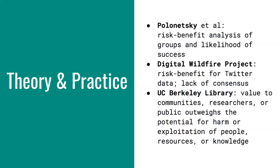In this video, we looked at a few examples from research teams who have wrestled with ethical considerations in big data. Polonetsky et al. developed a formula for a risk-benefit analysis based on the scope of benefit to different groups and the likelihood that each group would receive those benefits. The Digital Wildfire Project attempts a risk-benefit analysis for Twitter data, but suggested local practices inform judgment rather than propose their own best practices. The UC Berkeley Library is working on ethical guidelines for the provision of digitized materials that ask whether the value to cultural communities, researchers, or the public outweighs the potential for harm or exploitation of people, resources, or knowledge. Coming up in part four, we'll conclude with a conversation about norms and advocacy.